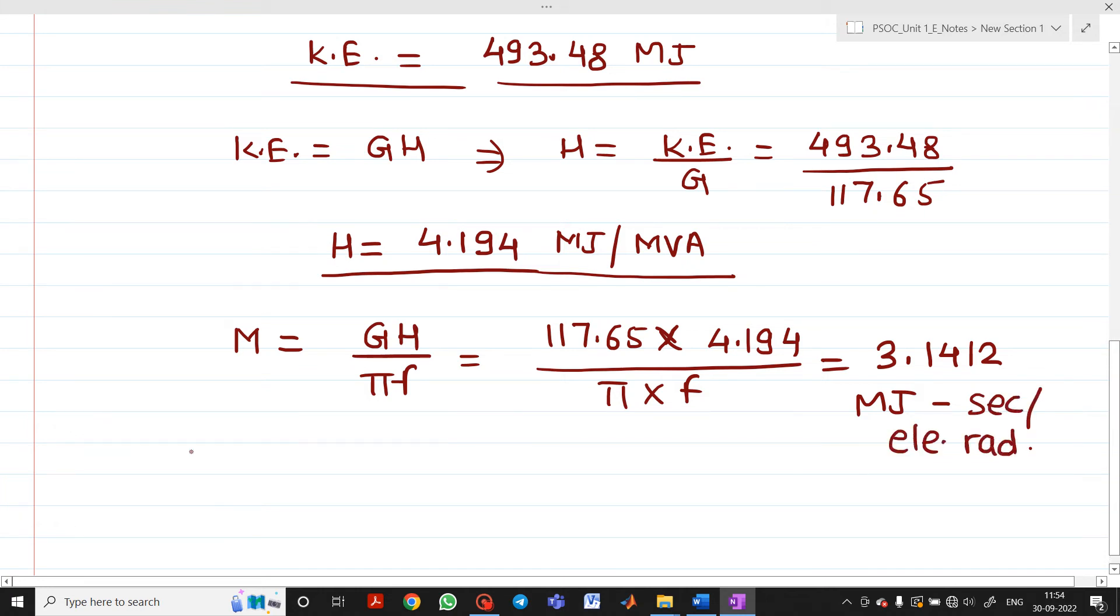If you want the answer in degrees instead of radians, the formula is G H divided by 180 f. So 117.65 times 4.194 divided by 180 times 50.